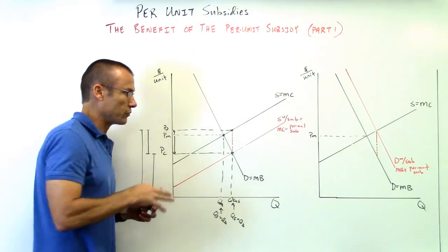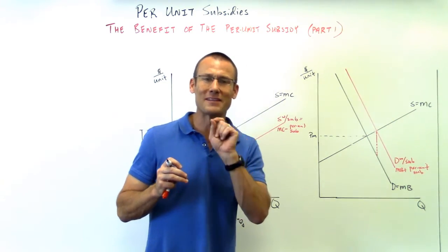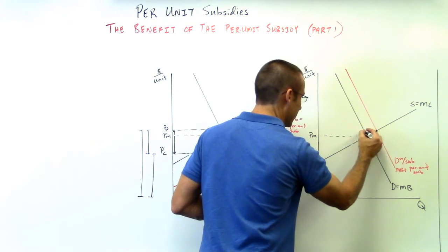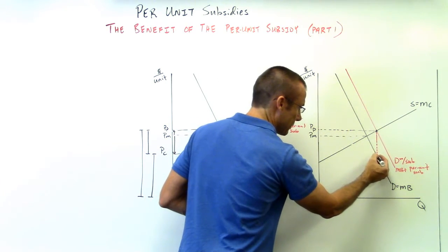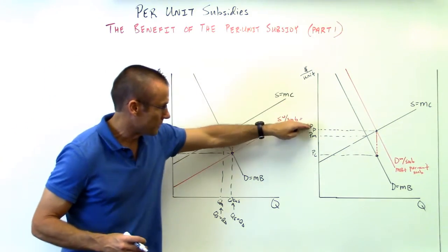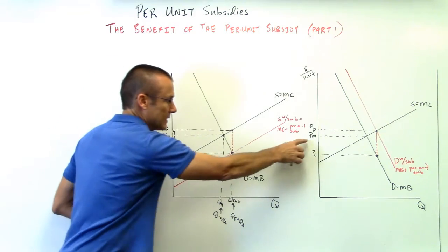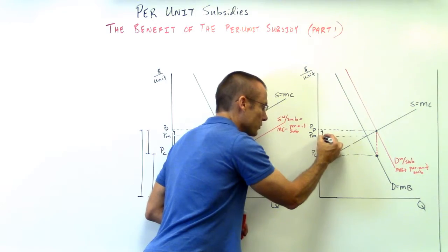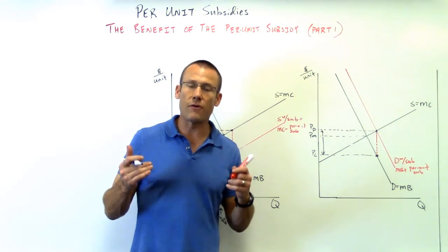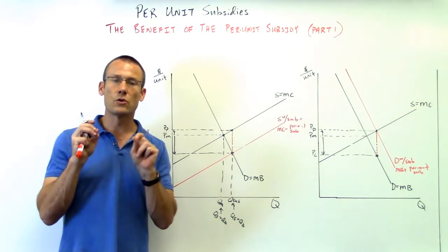Let's go over to the second graph. Here the government is cutting a check to the consumer — handing money to the consumer — shifting the demand curve. That top part is price producer. The bottom part — you can see I'm on the old demand curve — that's price consumer. PP change versus PM, PC goes down — PP and PC changes are pretty much the same. So price producer, price consumer: once again, who's getting the bigger benefit? Clearly the consumer — their price is going down, which they prefer, far more than the producer's price is going up.